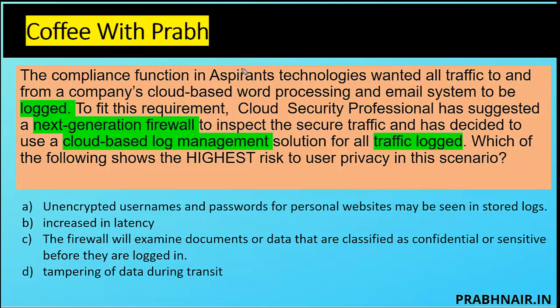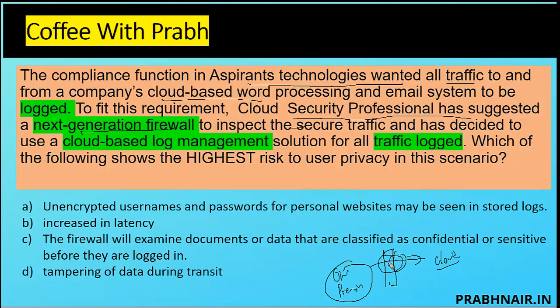Next coffee shot: the compliance function at Aspirant Technology wants all traffic to and from a company's cloud-based word processing, SaaS-based solution, and email system to be logged — essentially all traffic going from on-prem to the cloud needs to be intercepted. A cloud security professional suggested implementing a next-generation firewall to monitor content. They also decided to use a cloud-based log management solution stored in the cloud server. Which of the following is the highest risk?